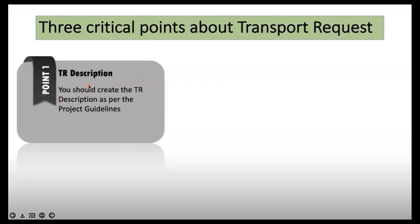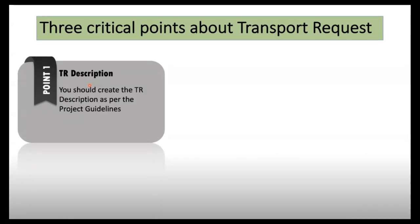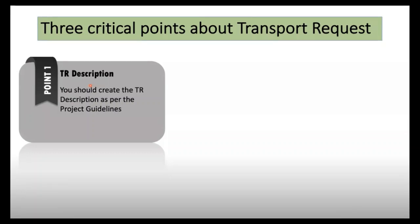For an implementation project, your project will have a company code plus a project code, however your company has designed the TR description. You should follow that because it is required for an audit. Based on the TR description, one can identify which project a TR belongs to, which ticket it relates to, or which rollout project it is for based on the project code. You should follow the guidelines, not just name it however you feel.